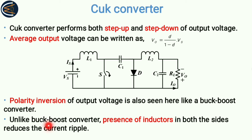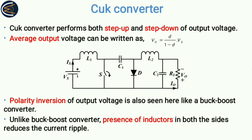Unlike the buck-boost converter, the presence of inductors on both sides reduces the current ripple — that is one advantage of the Ćuk converter. Inductors are present at both input and output sides, whereas in the buck-boost converter no such arrangement exists, resulting in very high current ripples on both sides. Due to these inductors, an external filter is not required, or its requirement is very less, which also reduces cost.